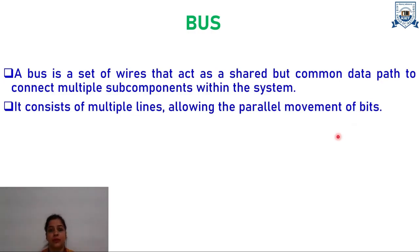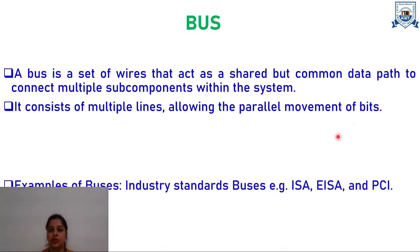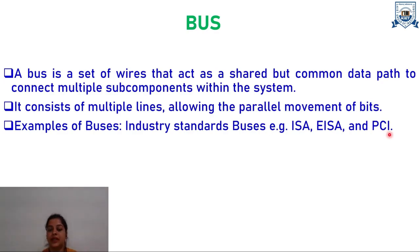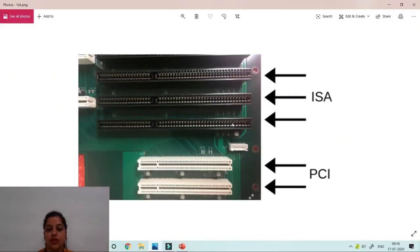Students often ask how a bus looks practically. Examples of industry standard buses include ISA, EISA, and PCI. ISA stands for Industry Standard Architecture, which is a 16-bit internal bus of IBM PC. EISA stands for Extended Industry Standard Architecture, whereas PCI stands for Peripheral Component Interconnect. PCI is a local bus first implemented in IBM PC compatible and is used for attaching hardware devices in a computer. This is the pictorial representation of the PCI and ISA bus — on this board we have 2 slots for PCI and 3 slots for ISA.